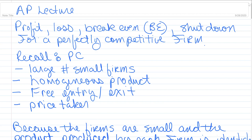Recall that there are four characteristics of a perfectly competitive market. Number one, you have a large number of small firms. Number two, they produce a homogeneous product, which means that each firm's product is exactly like the other firms', so they are all identical and they are perfect substitutes for each other. The next characteristic is free entry and exit, which will drive each firm in the industry to break even in the long run.